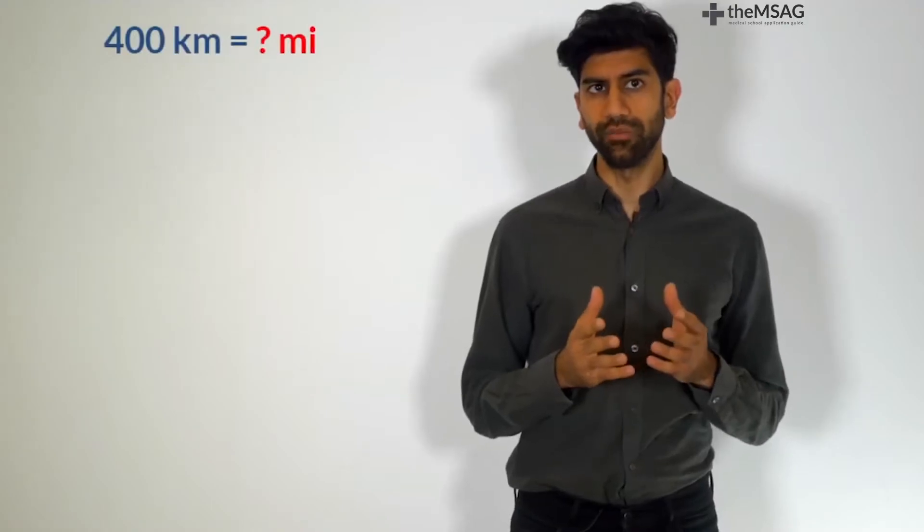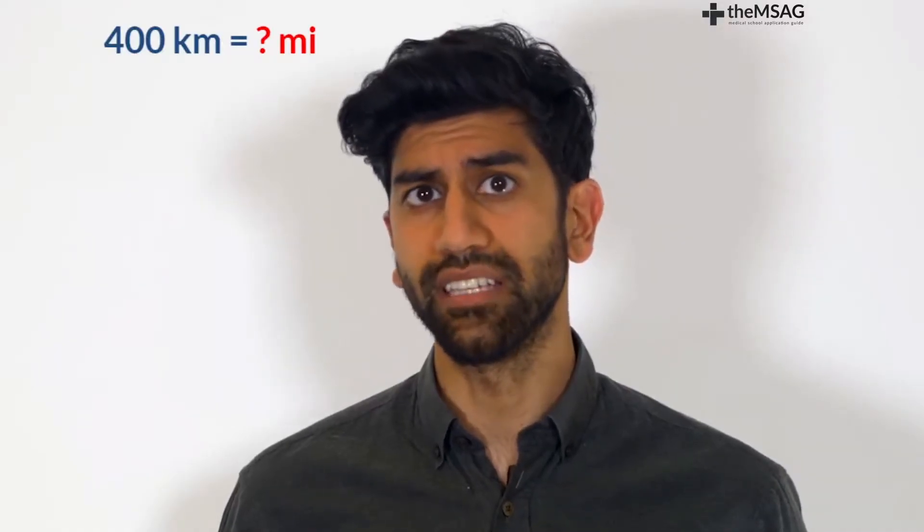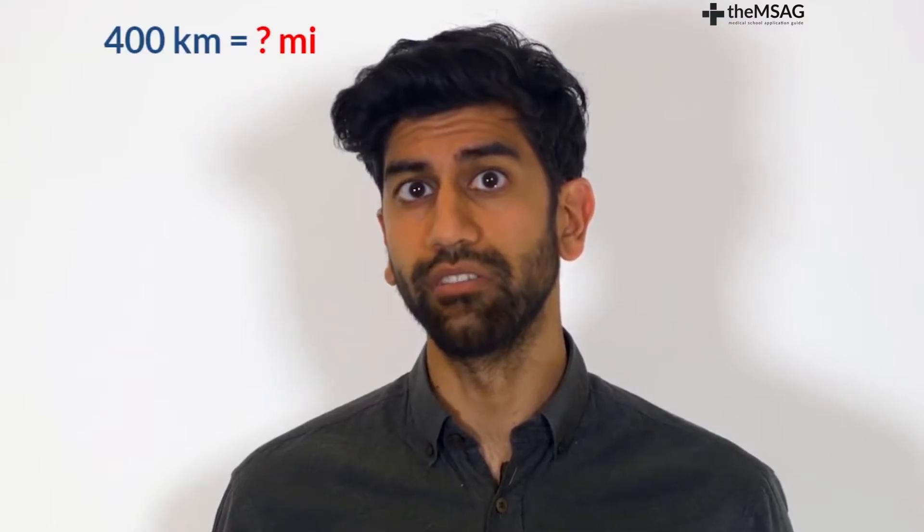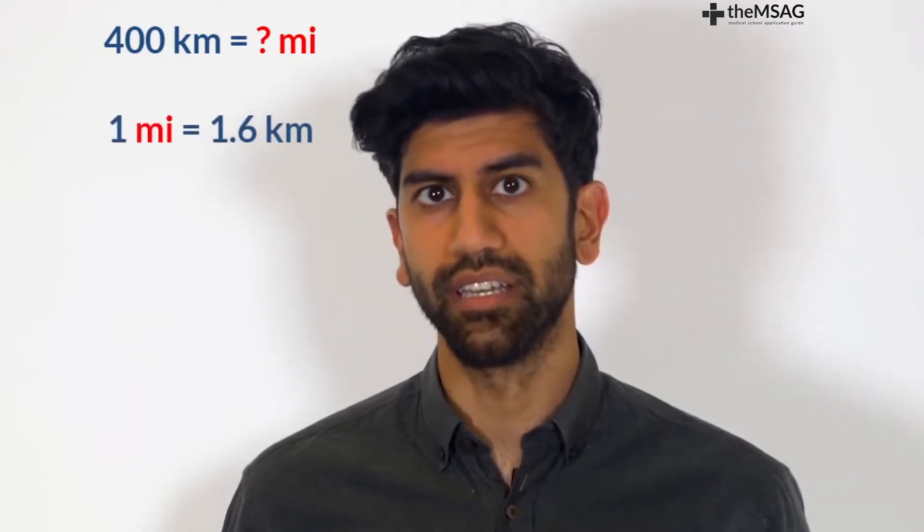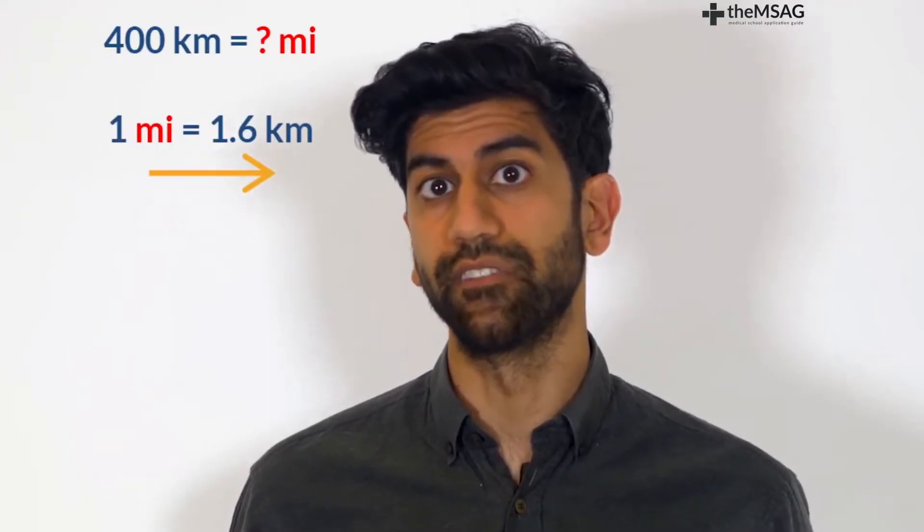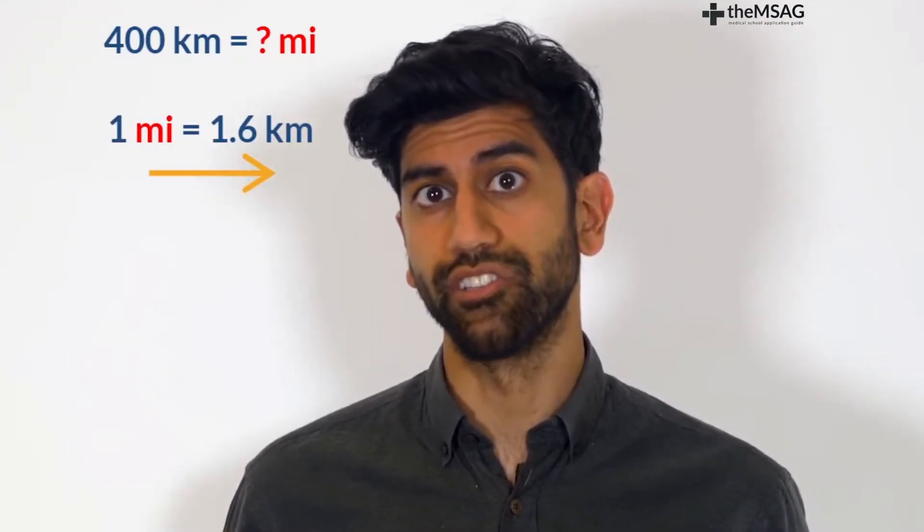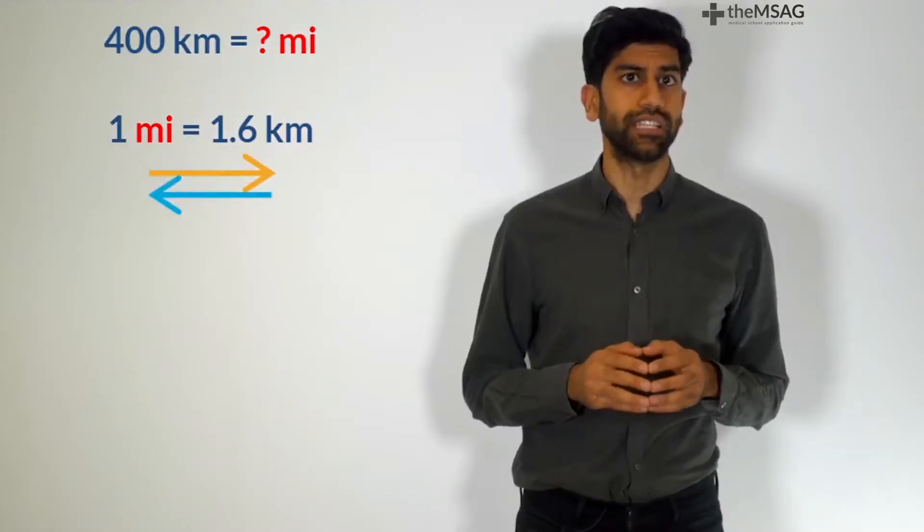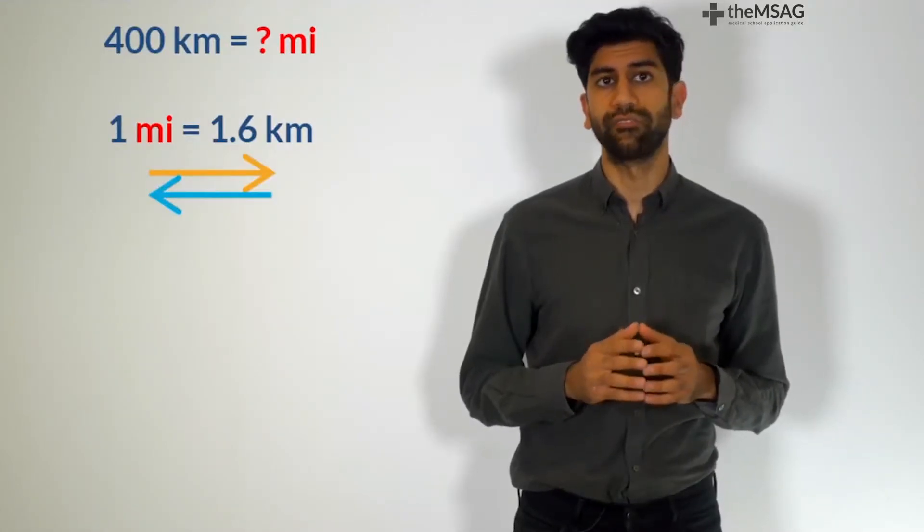Let's do another example. What is 400 kilometers in miles? Write the conversion keeping the single unit on the left: 1 mile equals 1.6 kilometers. Ask yourself if you're going from miles to kilometers the left of the conversion to the right of the conversion or from kilometers to miles right to left. Here we are converting kilometers to miles so we are going right to left.